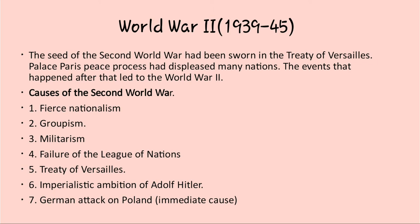The first cause is Fierce Nationalism. Fierce nationalism developed in countries like Germany, Japan, and Italy. Germans could never forget or overcome the Treaty of Versailles. Hitler started capturing some provinces of Austria and Czechoslovakia. Mussolini adopted imperialism. Japan was also imperialistic. Thus, world peace came into danger.